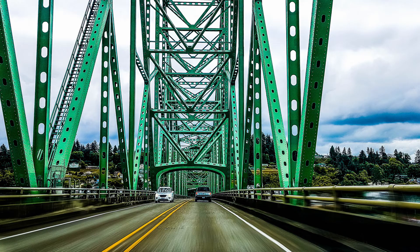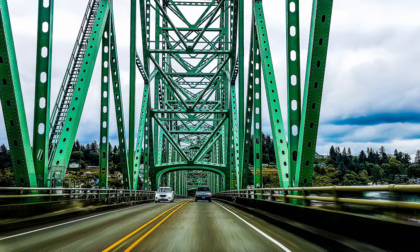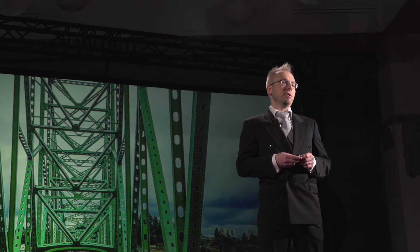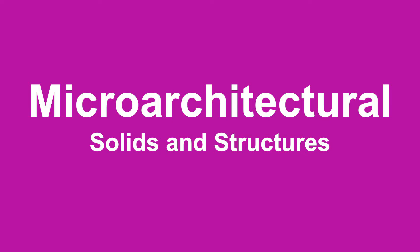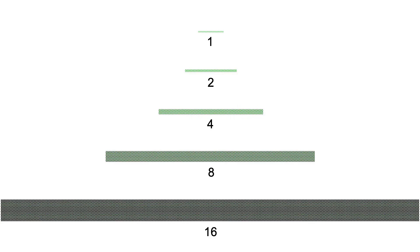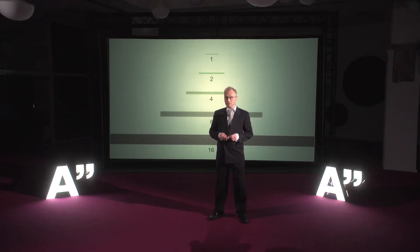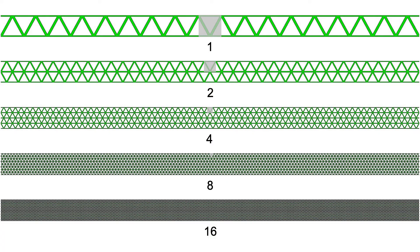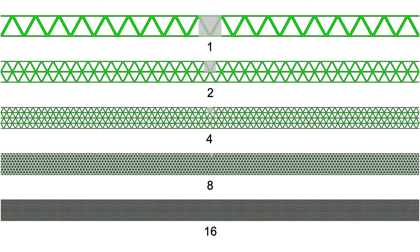Inspired by another class of traditional structures, we move to a research topic of mine: micro-architectural solids and structures. What you see here in this picture is five beams made of one specific material, and the numbers seem to indicate the size of the beams. But if we zoom a bit closer we can actually see that the material is an artificial material.